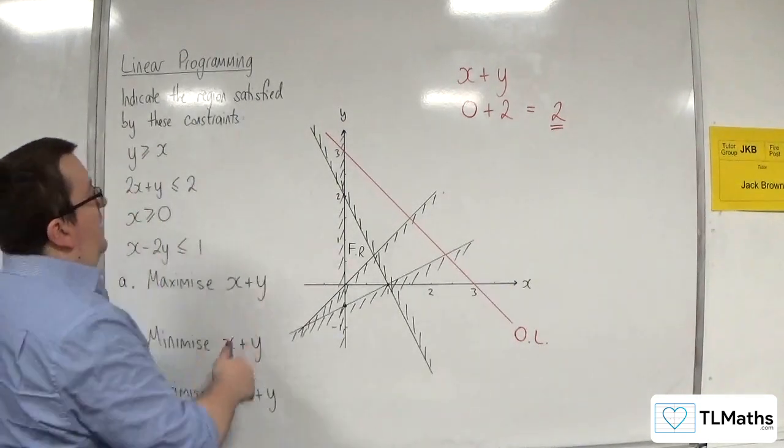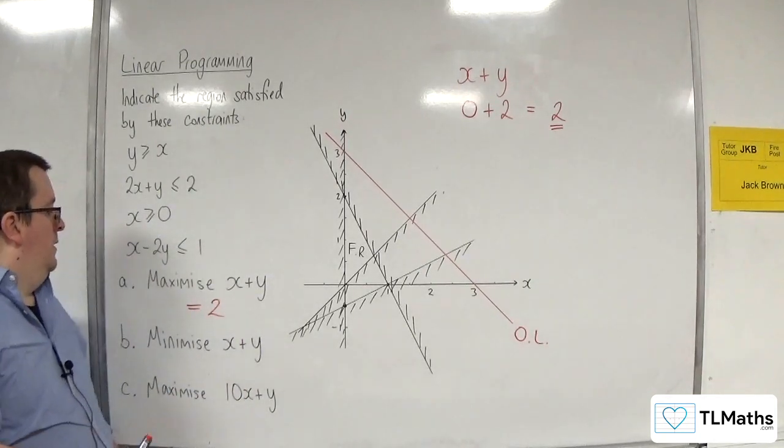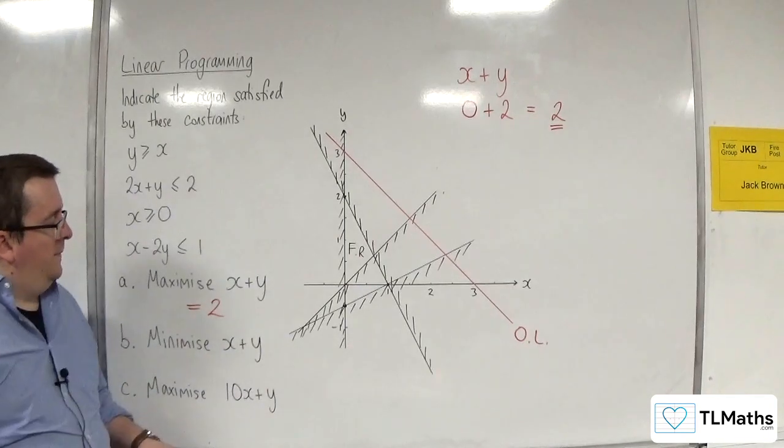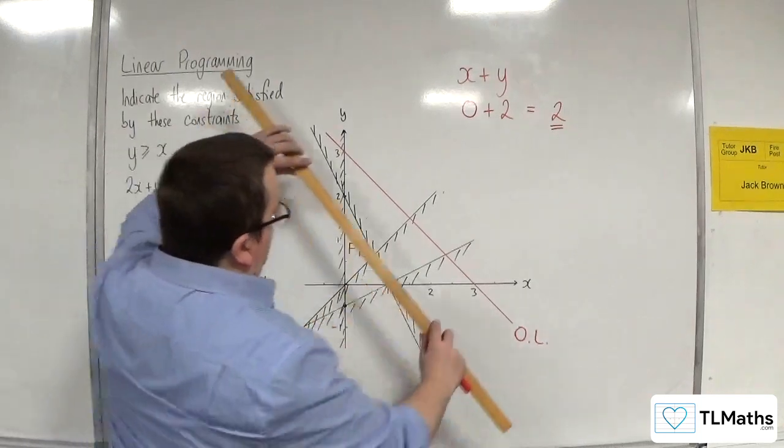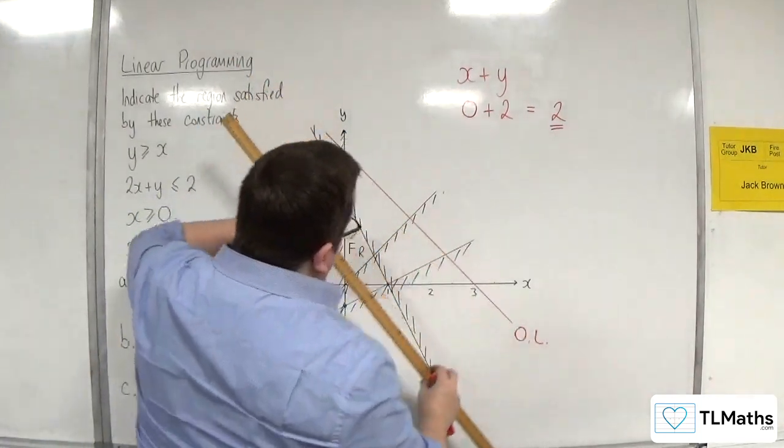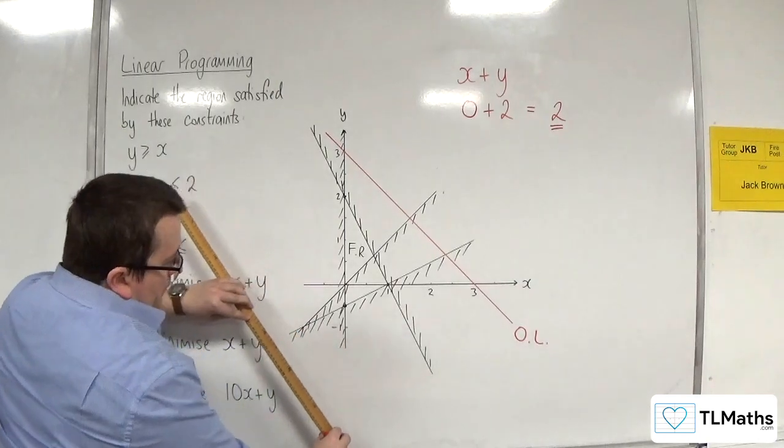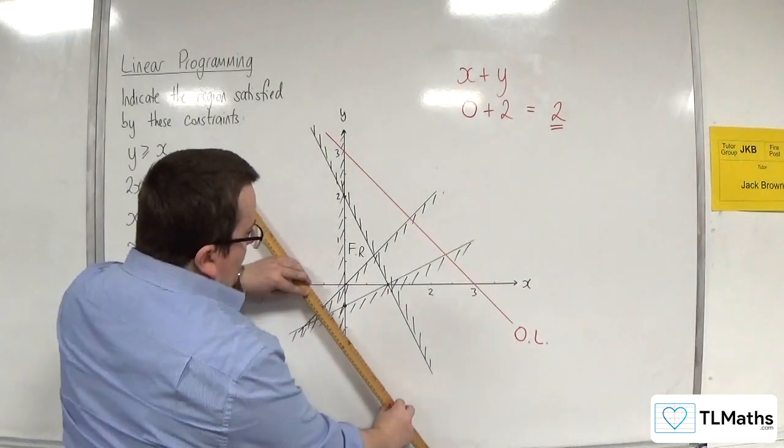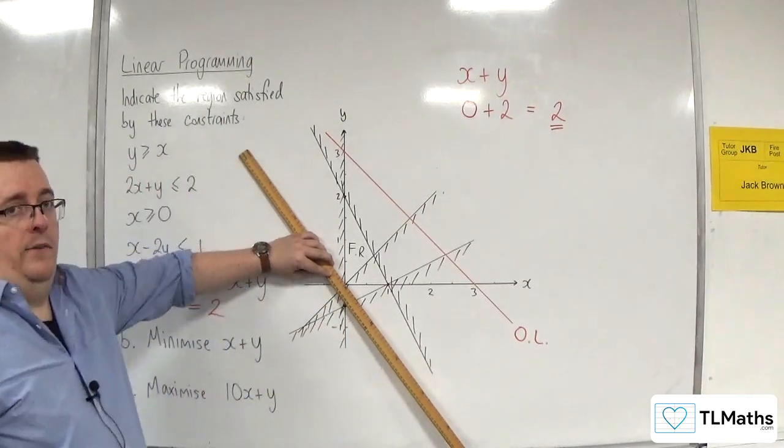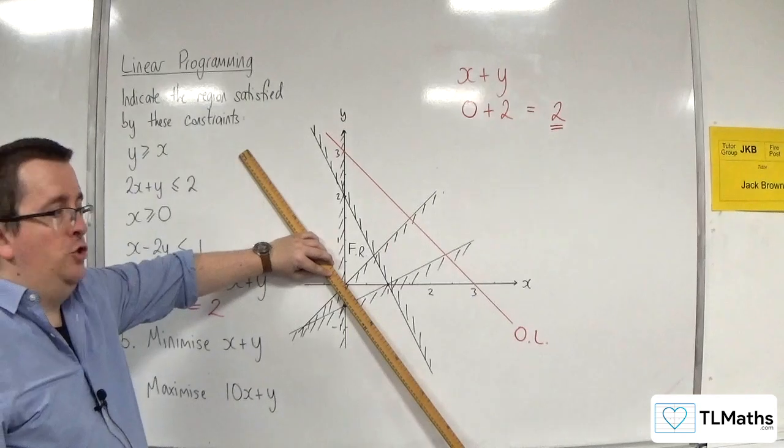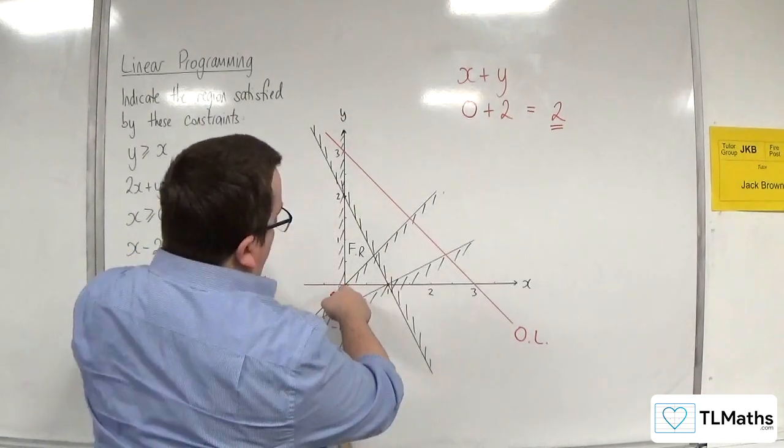So, maximizing X plus Y, the maximum is 2. Now, if you're minimizing, and we're going to minimize X plus Y. X plus Y, of course, is that gradient. But we're going to come in instead from the bottom left. So, you come in from the bottom left, and the first point that you hit in the feasible region will minimize that objective function. So, the first point that I hit is actually going to be 0, 0.